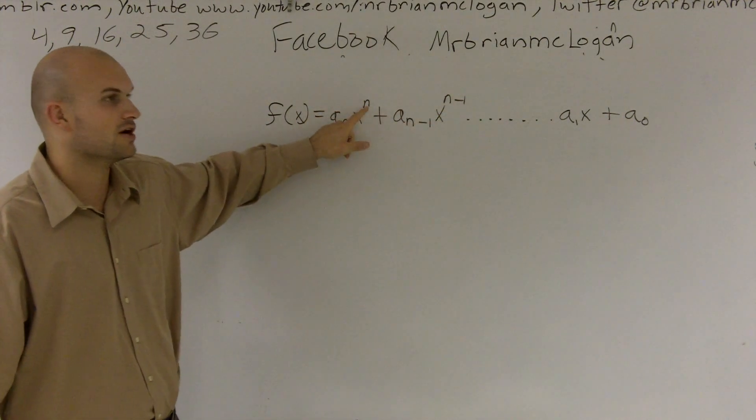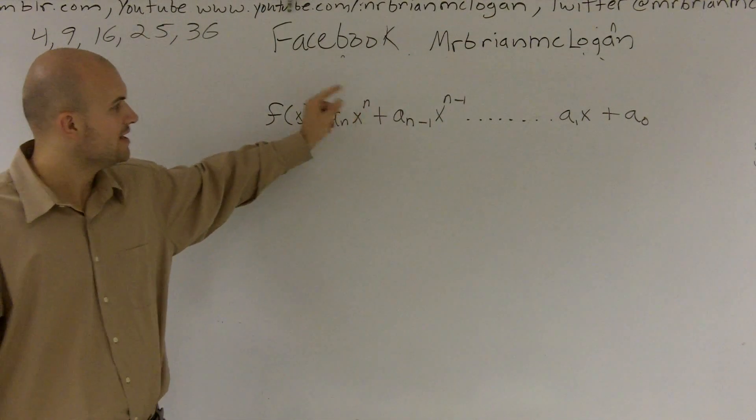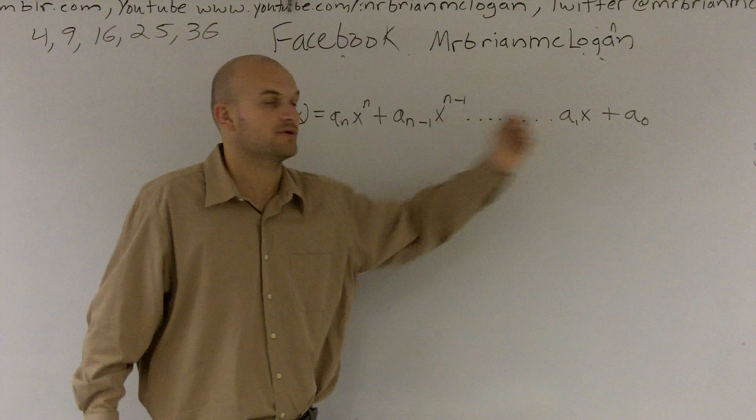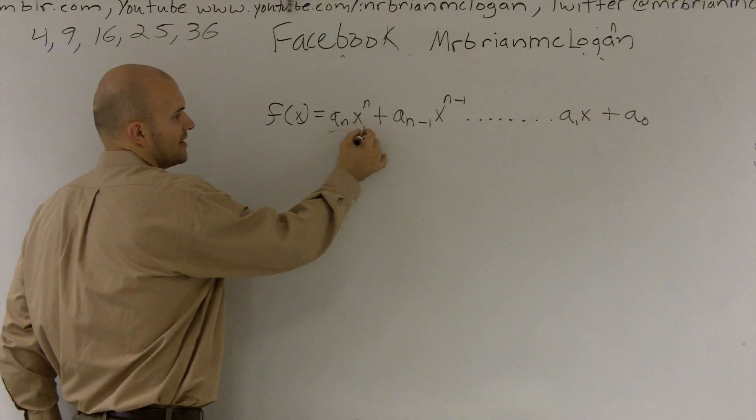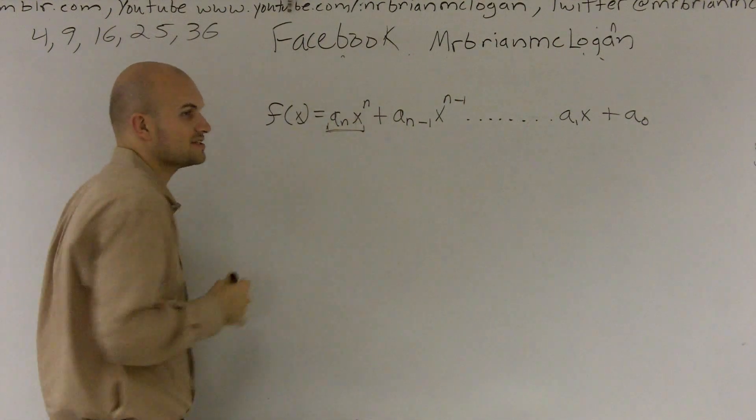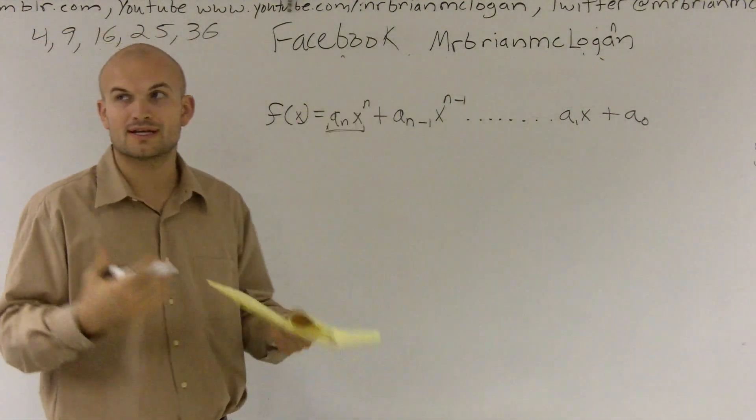So our highest exponent, which we like to call our degree of our polynomial, is going to be our farthest left. And then from there on, we're going to have descending exponents. Of that descending exponent, we have a sub n is what we call our leading coefficient.